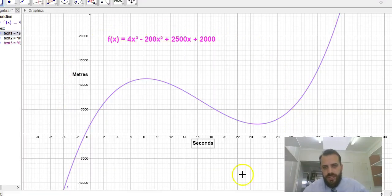For this video we're going to be using this graph. It's this function f(x) = 4x³ - 200x² + 2500x + 2000. It gives us this nice neat little thing here.